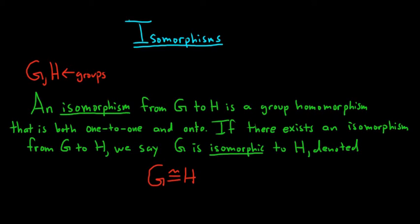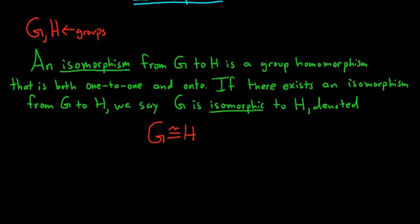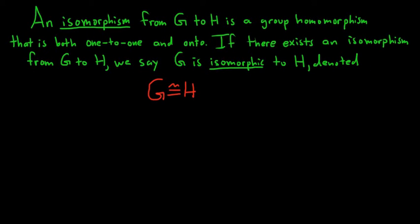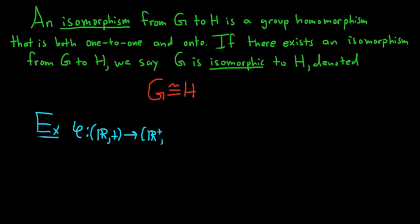Let's do a simple example where we're given a function and we prove it is an isomorphism, thereby proving two groups are isomorphic. We'll use the same example from the previous video. Our first group is the real numbers under addition, mapping into the positive real numbers under multiplication, with φ(x) = eˣ. We're going to show this is an isomorphism.